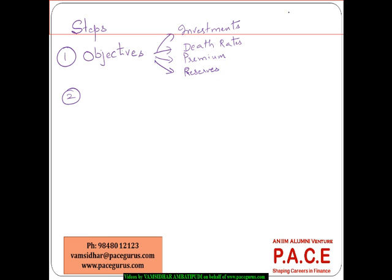Whenever I am defining a model, there are a set of inputs which come from various sets of assumptions, and some kind of calculations happening on these inputs — which I typically call the process or calculations — and this will result in terms of outputs.